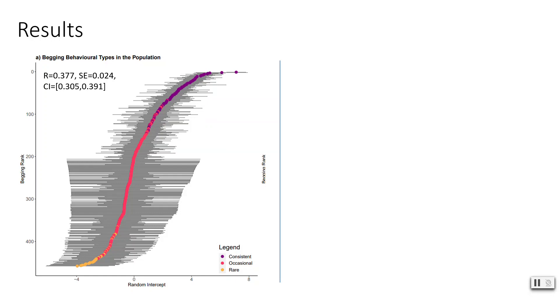For our model on begging behaviour, here we have plotted the random intercept on the x-axis with the order forming a ranking system which we have put on the y-axis. As you can see, we found that an individual's likelihood to beg fell on a scale, with some individuals being extremely likely to engage with people for food and others not really engaging at all. This behaviour was highly repeatable among individuals over the two years, showing that it is consistent at the individual level.